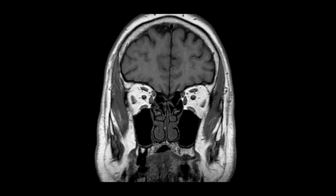Here is a coronal T1 weighted MRI scan. The CSF fluid is of low signal, and so this is a T1 weighted image. Here's the left optic nerve. You have four main extraocular muscles that are called the rectus muscles: this is the left superior rectus muscle, this is the left lateral rectus muscle, this is the left inferior rectus muscle, and this is the left medial rectus muscle.